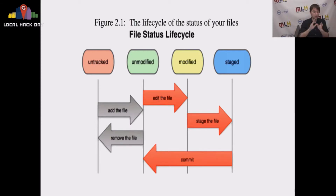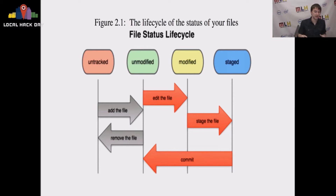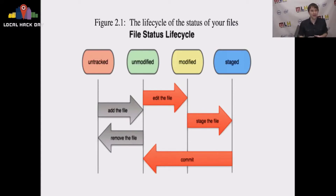So the life cycle, one more time: you have your untracked files, you add those untracked files, you have your unmodified files and you edit those, you add all of this into the staging area, and then in order to get back to the unmodified state you commit those files. That is when everything is in the Git database and Git agrees that your working directory is clean.